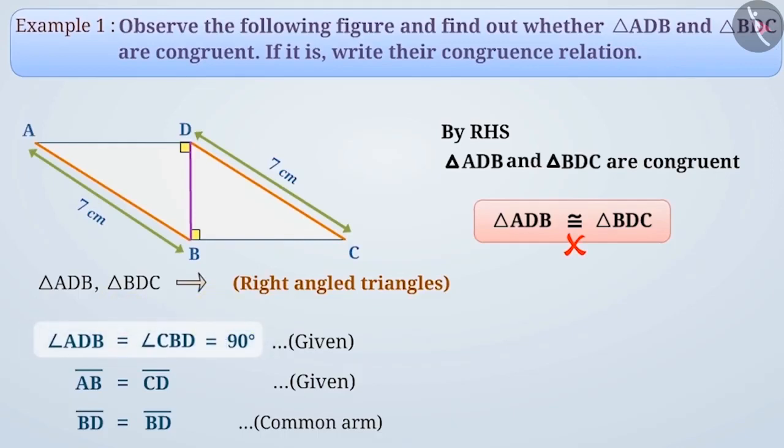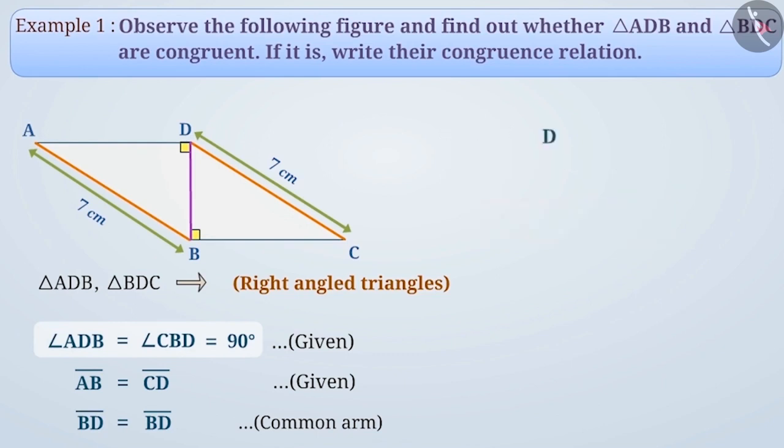In this way, we can say that the vertex D corresponds to vertex B. Here, AB is equal to CD. And at first, we concluded that the head of vertex D is corresponding to B. Hence, we can say that the vertex A corresponds to the vertex C.